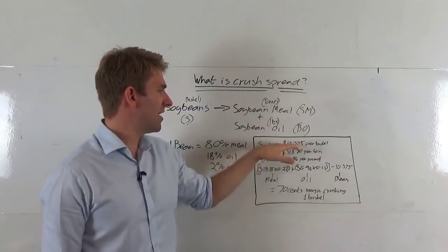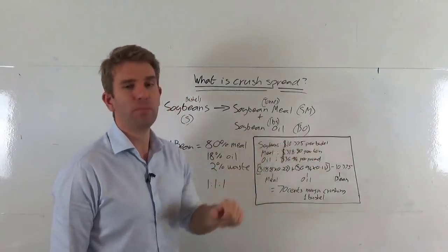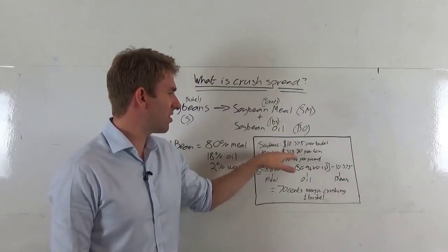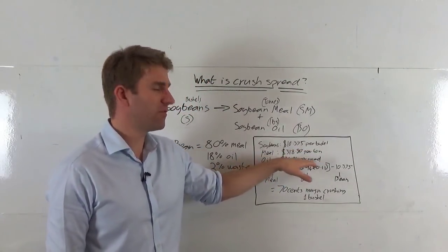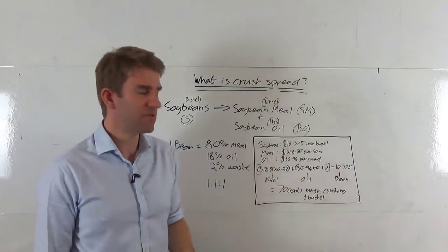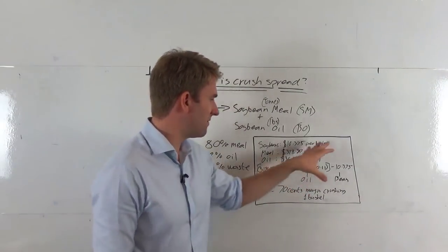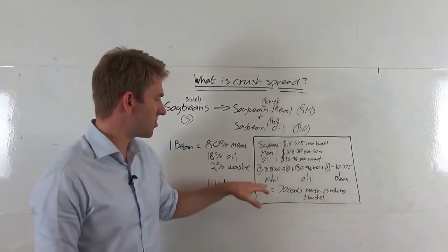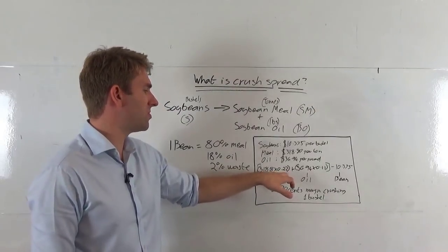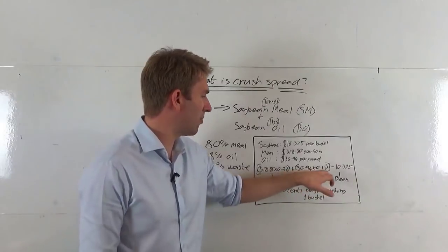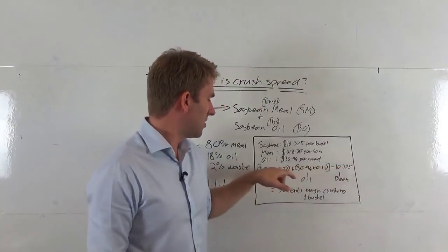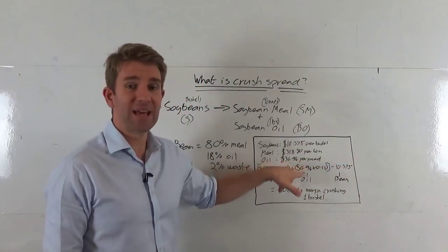Soybeans are trading at $10.375 per bushel, soybean meal is trading at $318.80 per ton, and soybean oil is trading at $36.94 per pound. Really confusing because different units. So what we do is we convert them all to a common unit. Soybean meal, we multiply by 0.22. Soybean oil, we multiply by 0.11.